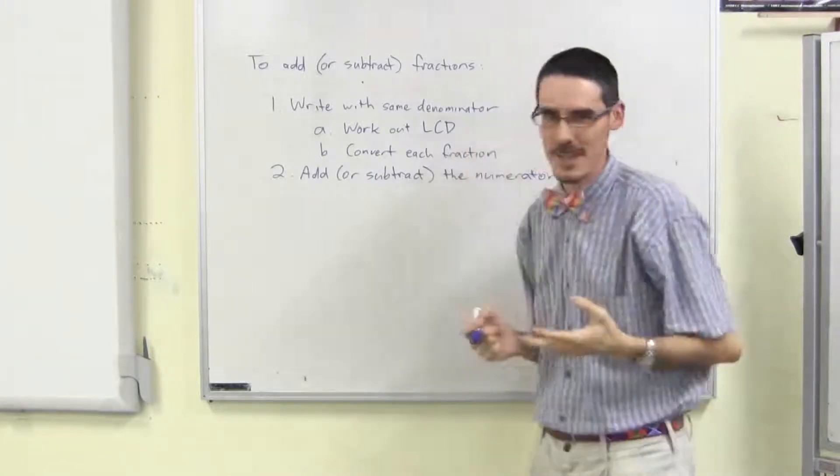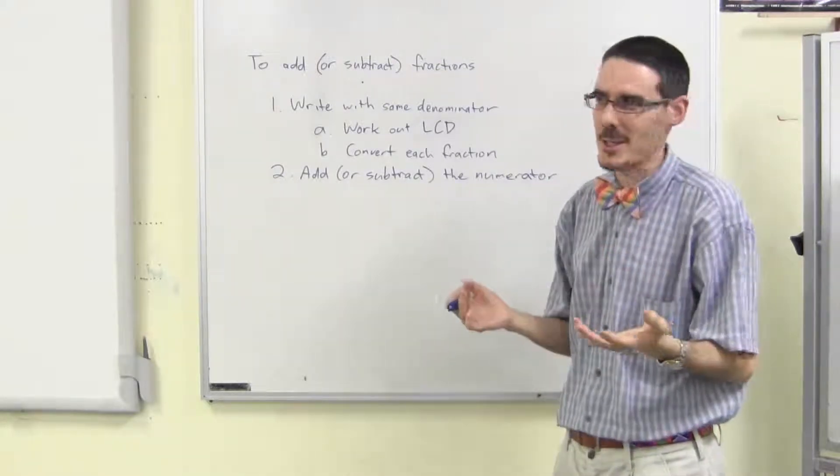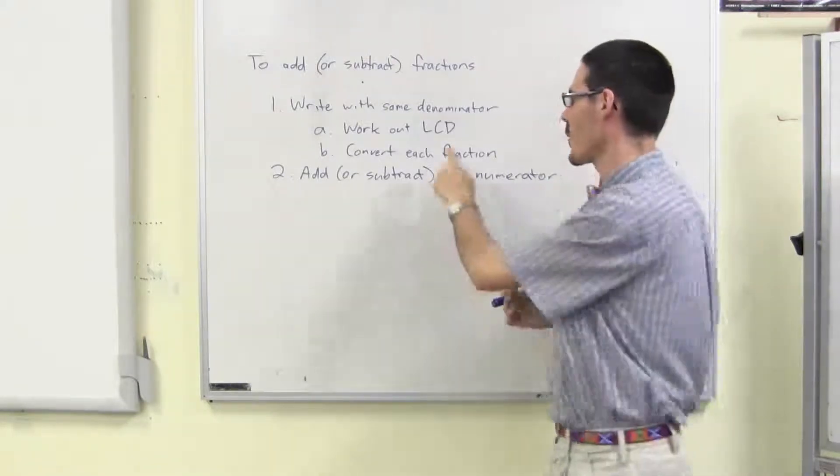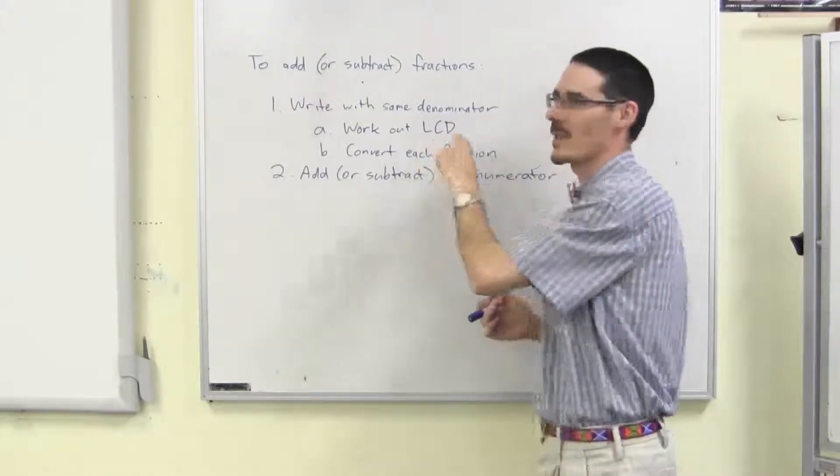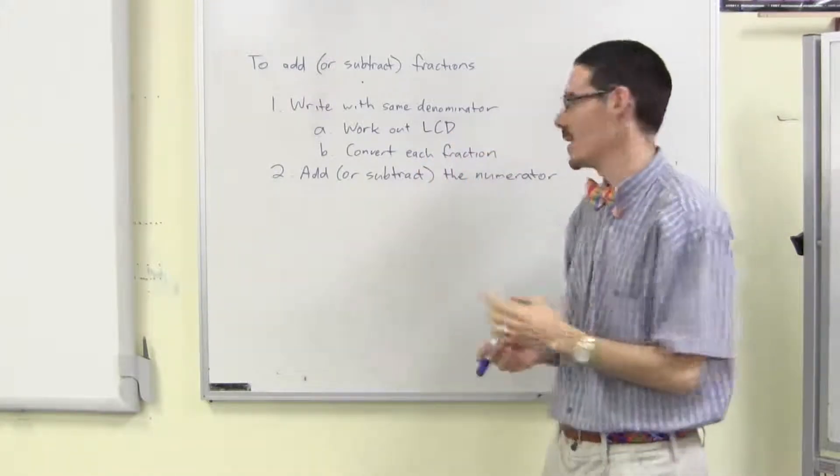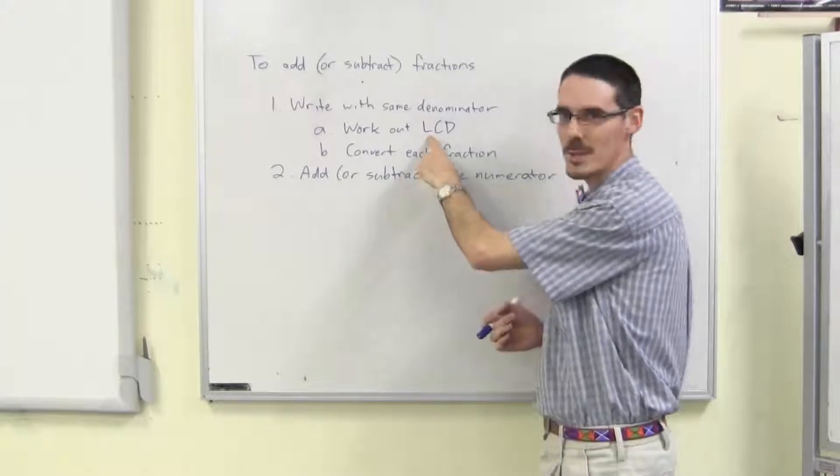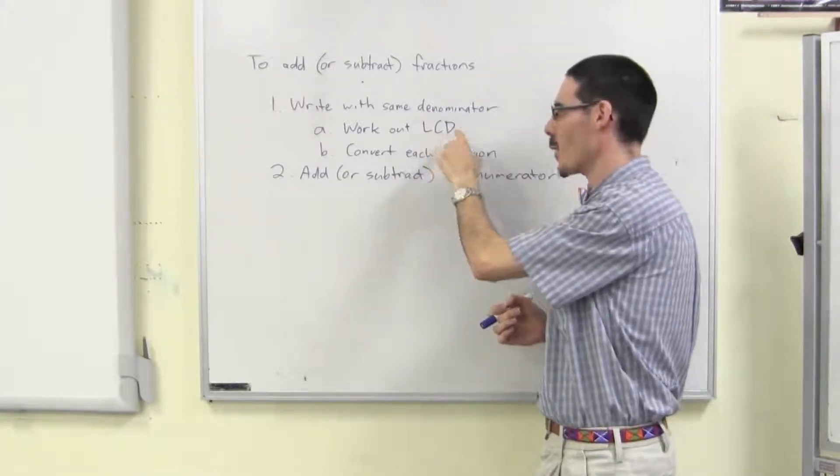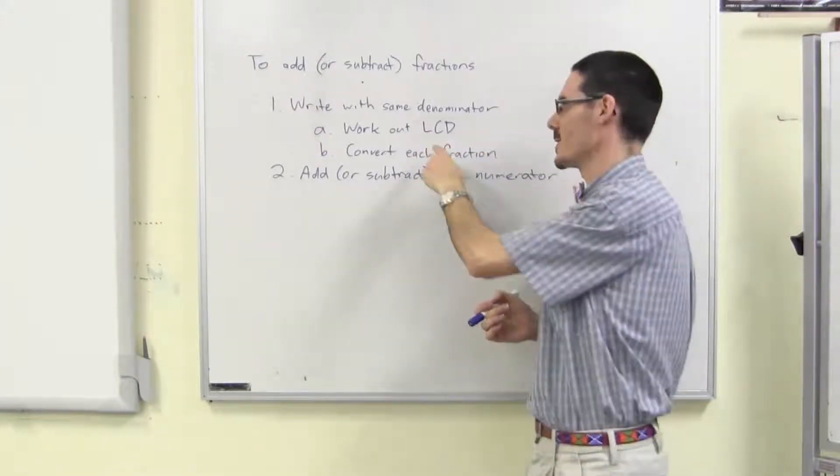Now sometimes that's easy, it'll be really obvious how to change it. But sometimes it's a bit harder. What we need to do is find the lowest common denominator. The smallest number, lowest, that both of the two numbers I've got divide into.